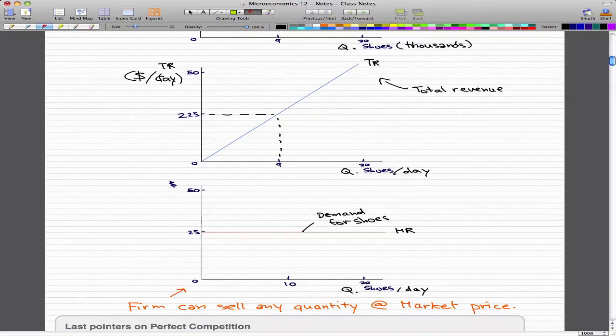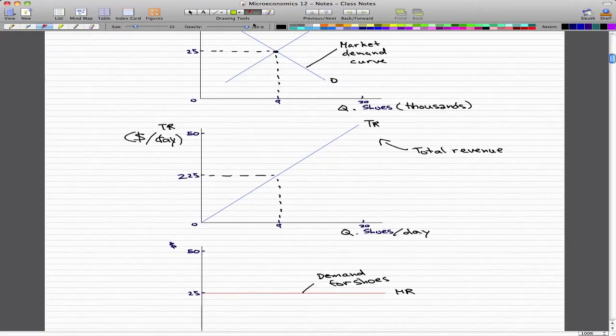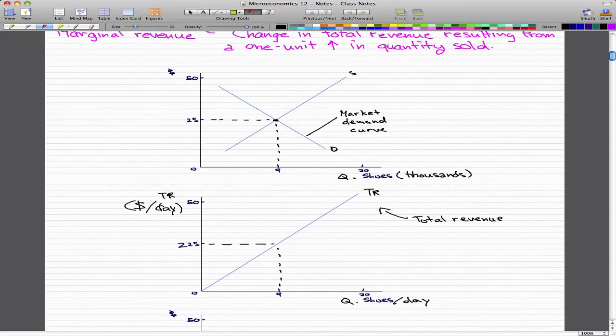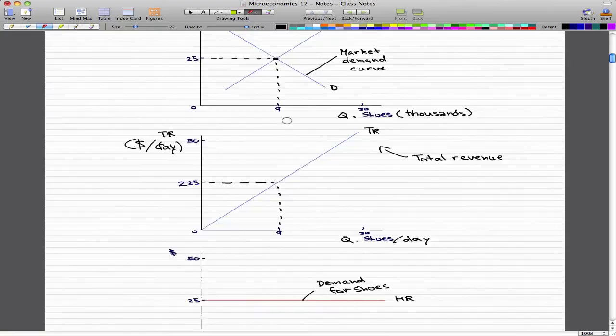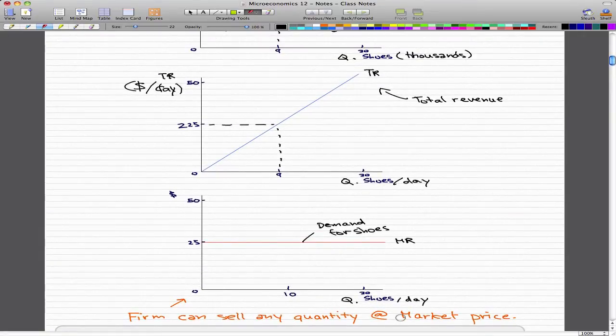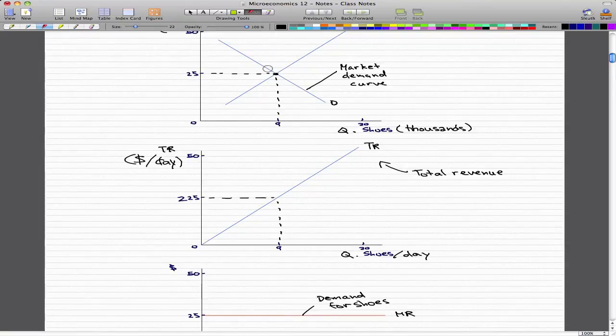This last graph gives us the demand for shoes; it's the marginal revenue curve. This curve shows that a firm can sell any quantity it chooses at the market price. For our case, we wouldn't really want to sell more than 9,000 shoes. We don't want to sell more and we don't want to sell less; we just want to sell at the intersection. Firms can sell at any quantity they want, but the most efficient quantity to sell at is 9,000 shoes because that's where we intersect.